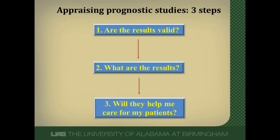Hi, Terry Schoeningfeld here from UAB School of Medicine. In this video I'll describe how to critically appraise a prognostic study. We'll talk about the four questions that you should try to answer while reading a prognostic study to make sure it's methodologically sound. The three steps in critically appraising a prognostic study: one is to determine if the results are valid, which will be the focus of this lecture; two, to determine what the results are; and three, to determine if results will help me care for my patient.